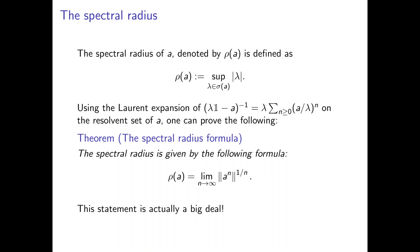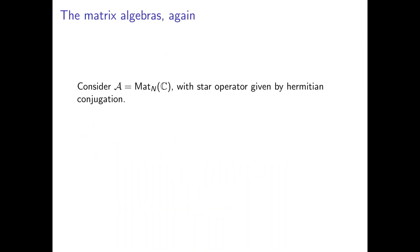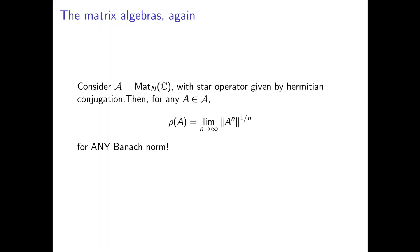This formula is actually quite amazing. For instance, consider the matrix algebra with the star operator given by Hermitian conjugation. Then for any matrix in the algebra, the spectral radius — which is just the maximum absolute value of the eigenvalues of the matrix — is going to equal this limit of the norm. And this is true for any Banach norm on this algebra, which is quite amazing. It doesn't matter if you take the 1-norm, the infinity norm, or the C*-norm — any norm will always produce the spectral radius by this spectral radius formula.